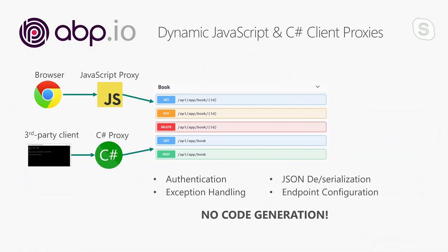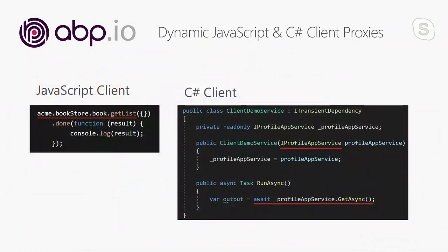Notice that it doesn't generate any code — it handles everything at runtime. You don't have large machine-generated code that you don't understand. The JavaScript proxy calls the method just like calling a JavaScript function. The C# client injects the application service interface, which is shared with the server. The injected service is a dynamic proxy object which internally performs HTTP calls to the remote server. You can use any service method just like calling a local method and get the result if provided.